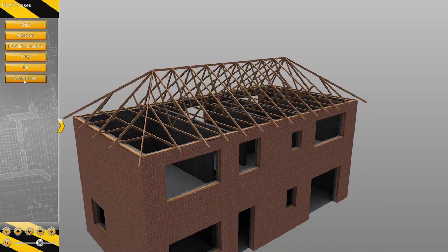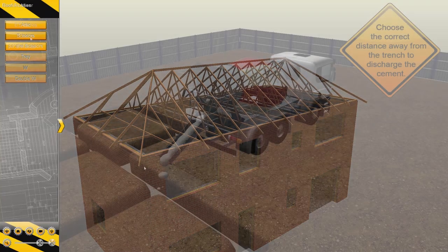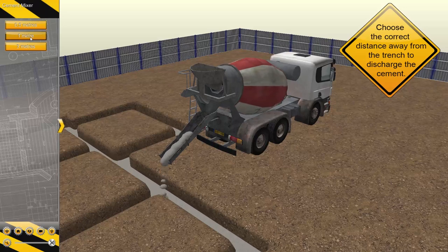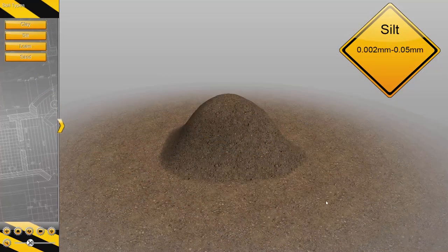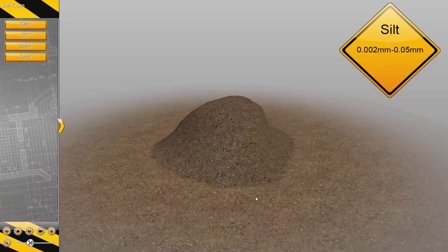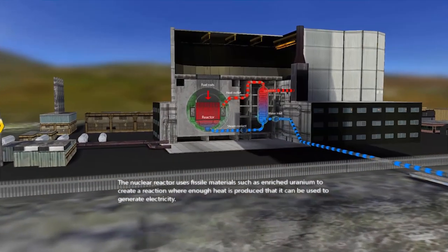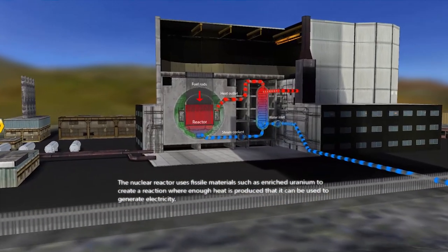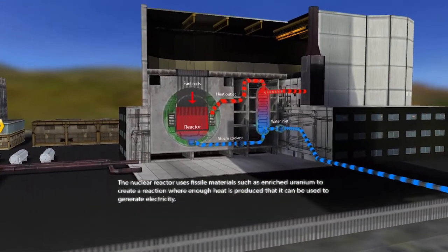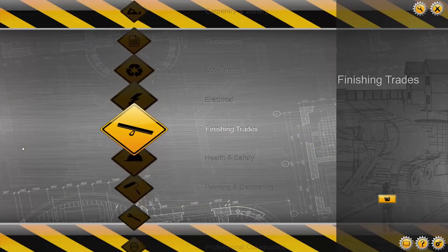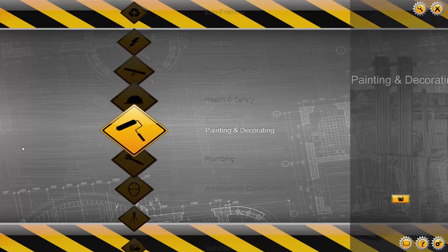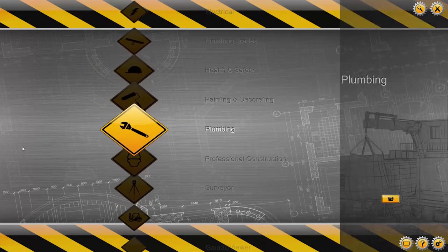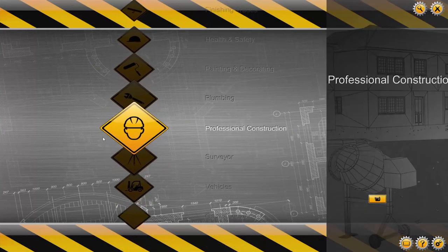Gaia Virtual Construction Site also provides a wide variety of material, from something as simple as soil types all the way up to how our homes are powered. Students and teachers can easily access different lessons for the different trades with the help of our categorised interface.